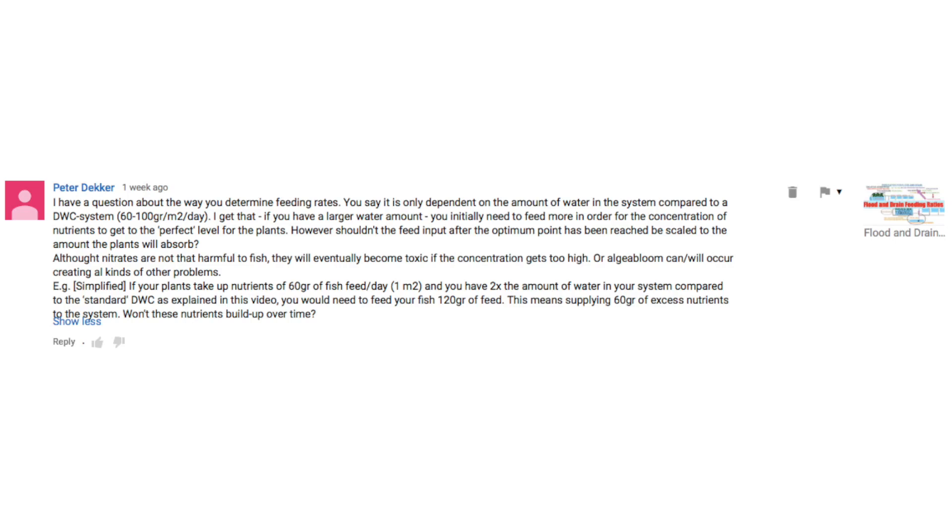I have a question about the way you determine feeding rates. You say it only depends on the amount of water in the system compared to a DWC system, 60 to 100 grams per square meter per day. I get that. If you have a larger water amount, you initially need to feed more in order for the concentration of nutrients to get to the perfect level for the plants.